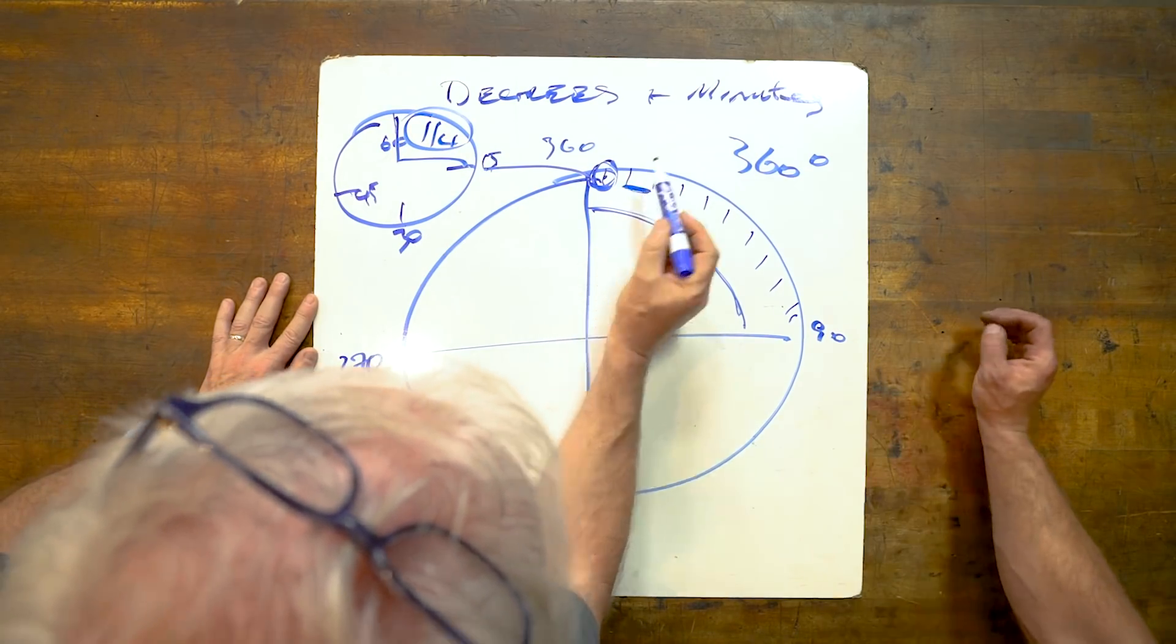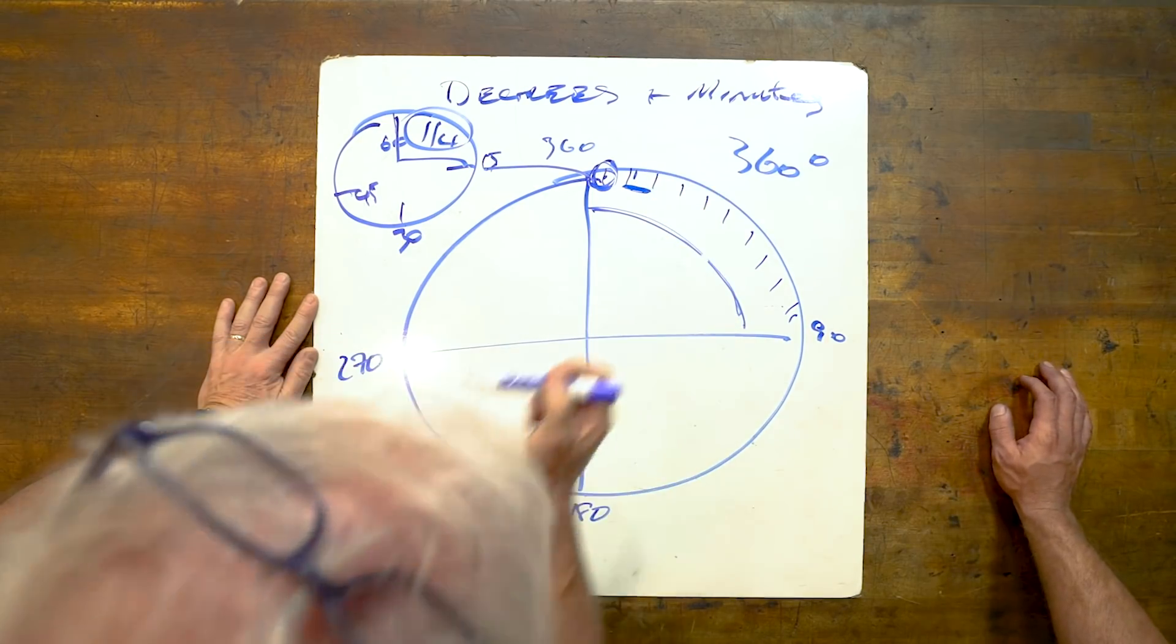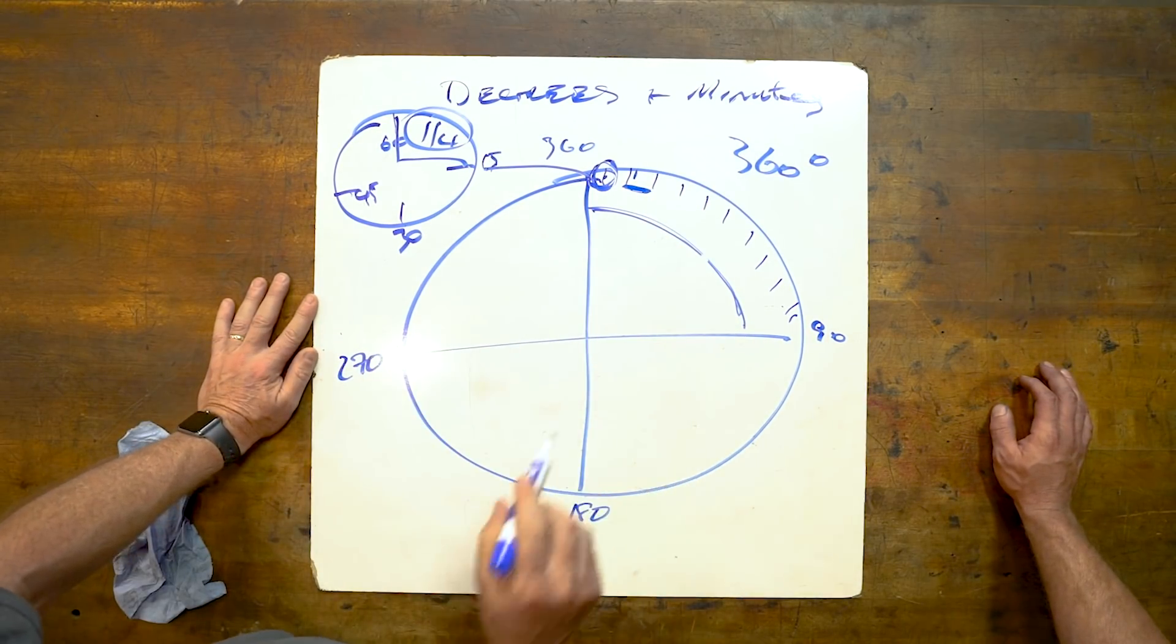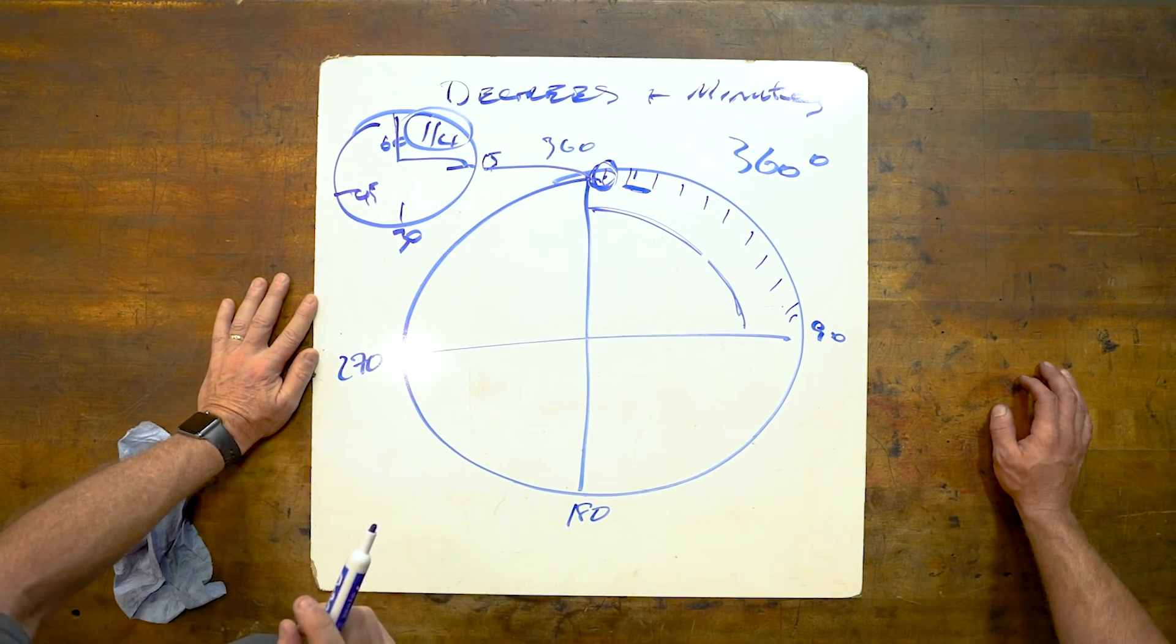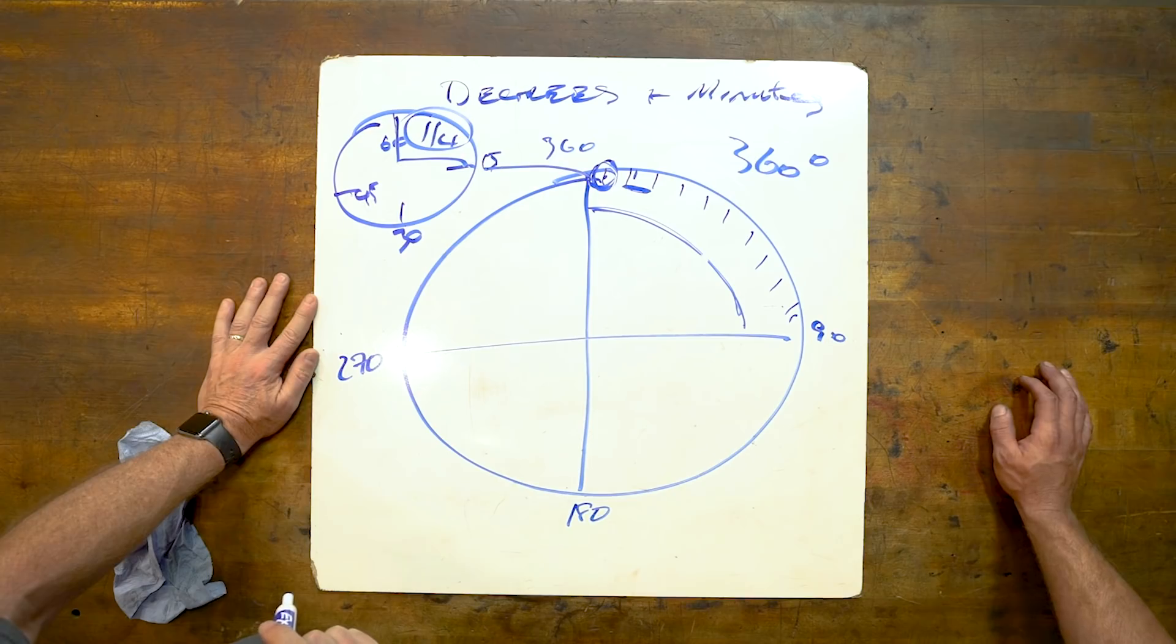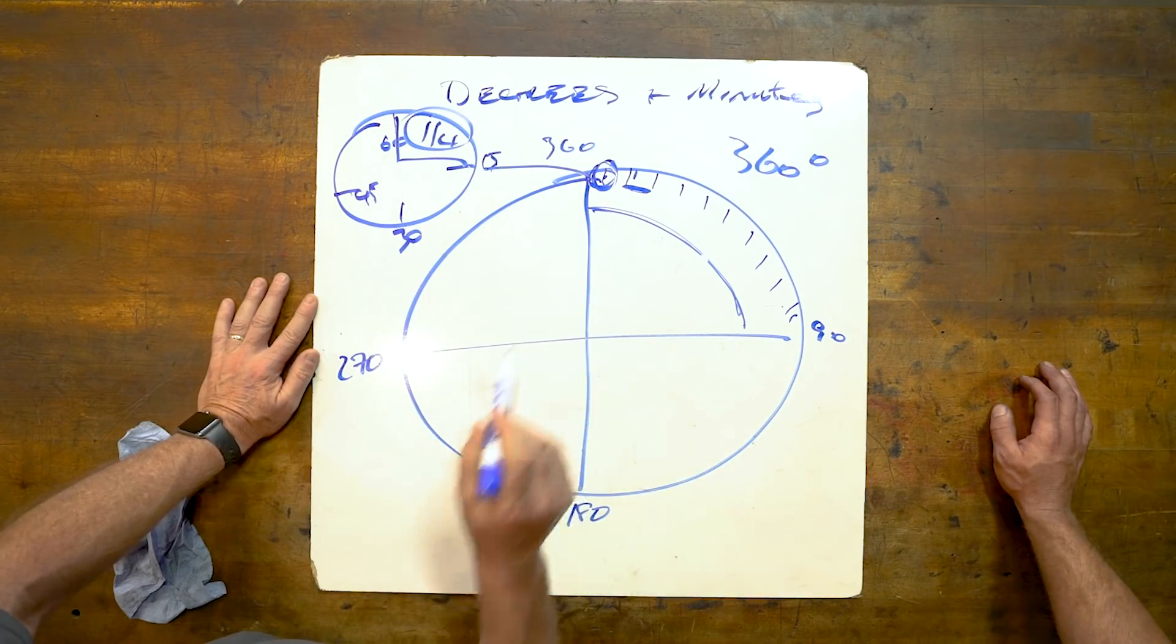If you take this to be one degree, it's one quarter of that. So one quarter of one degree, in real terms, on a car, is probably the width of a piece of paper or two pieces of paper. That's how precise it gets. That's very precise.